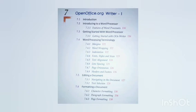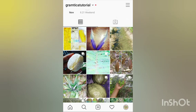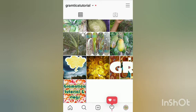Hello friends, today we are going to discuss Chapter 7 of Class 9 Computer Applications: OpenOffice.org Writer Part 1. It covers introduction to a word processor, getting started, word processing terminology, editing a document, and formatting a document. If you don't have a PC or laptop, you just have to install an app from the Play Store named OpenOffice Writer, also called Writer.